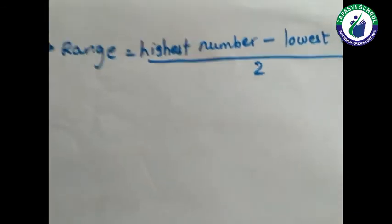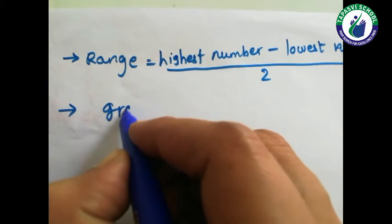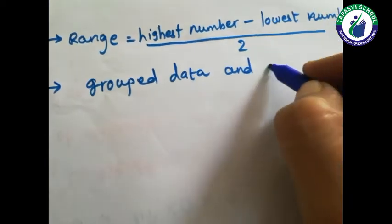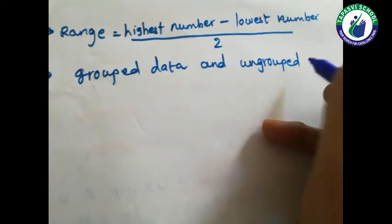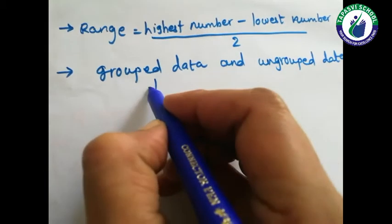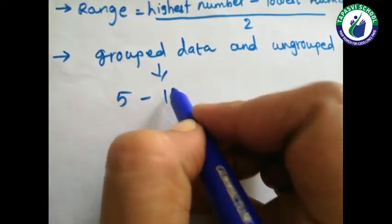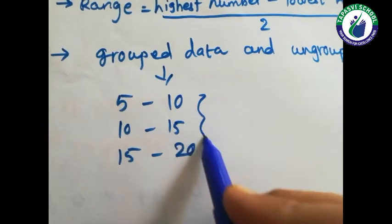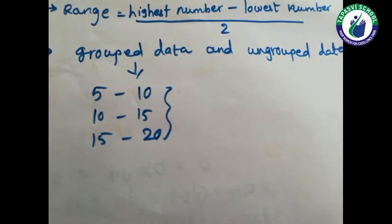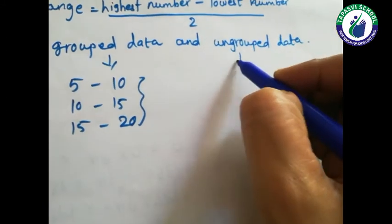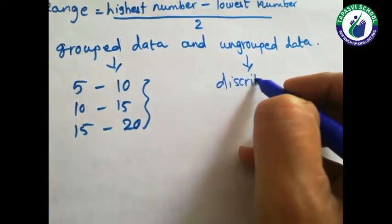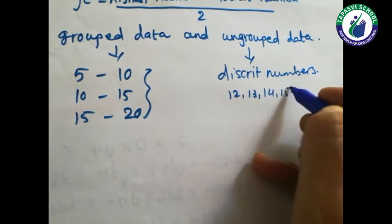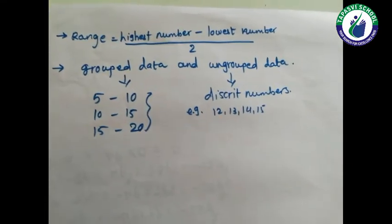Next, there is grouped data and ungrouped data. Grouped data means numbers are given in classes — for example, 5 to 10, 10 to 15, 15 to 20. This type of data is known as grouped data. Ungrouped data means discrete numbers are given — for example, 12, 13, 14, 15. This is known as ungrouped data.